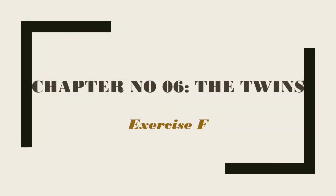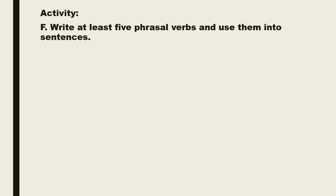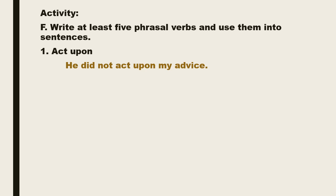Now we shall do exercise F of chapter number 6, The Twins. This exercise is related to phrasal verbs. A phrasal verb is a verb plus a preposition or adverb which creates a meaning different from the original verb. For example: drove off — 'She got into the car and drove off.' And get on — 'How did you get on in your examination?' These are phrasal verbs. The activity is to write at least five phrasal verbs and use them in sentences. The first is act upon, which means to use something as a reason or basis for doing something. The sentence: 'He did not act upon my advice.'